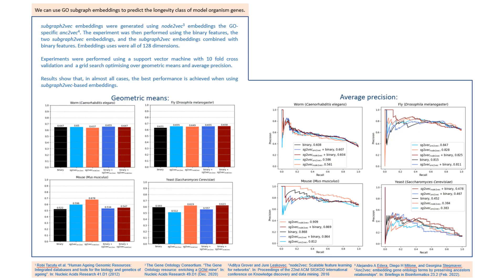In the final part of the poster, we demonstrate the results of using subgraph-to-vec based embeddings to predict gene longevity class. We compare the performance with the binary features to see how well subgraph-to-vec embeddings can capture the hierarchy of the gene ontology. We also use features which combine subgraph-to-vec embeddings with binary features to see if the embeddings can capture more informative information on top of binary features and improve the performance.